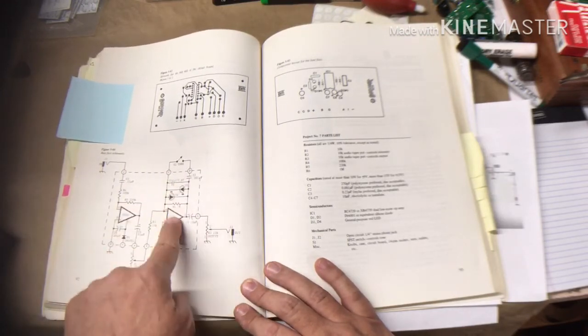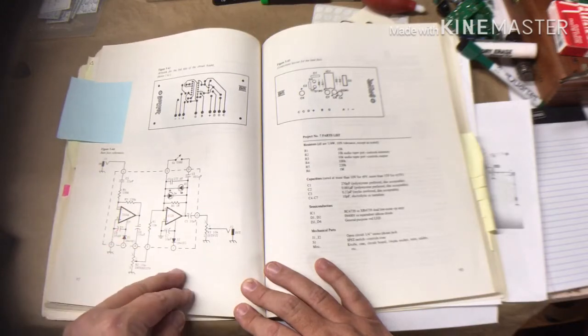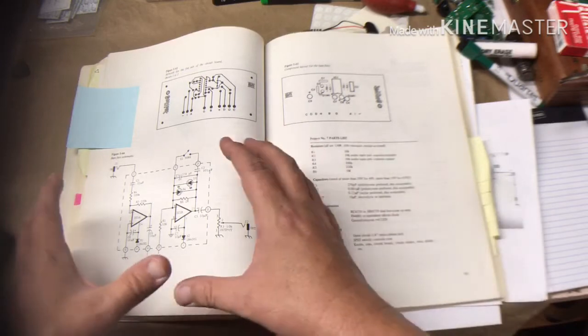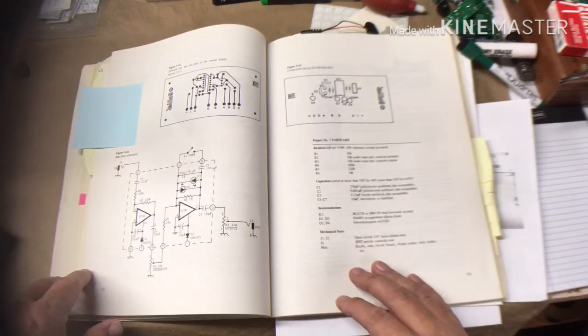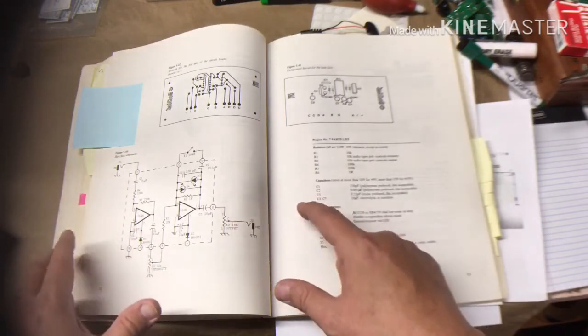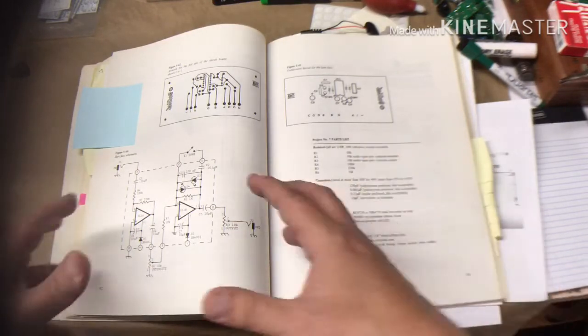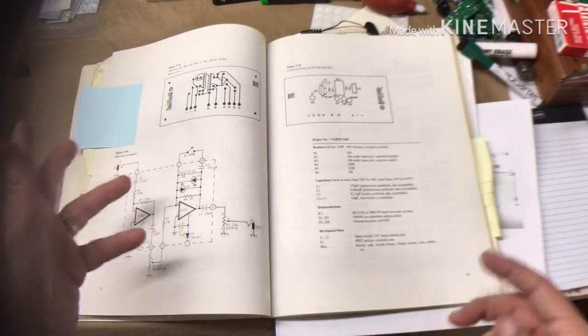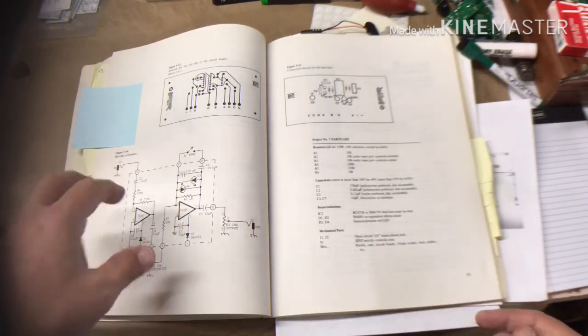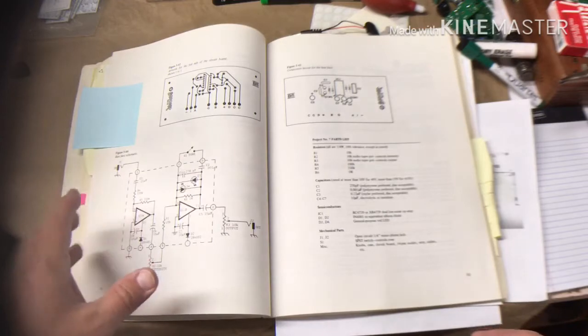And so that got me thinking, well can I just put all of those projects together? Yeah, there are some different capacitor and different resistor values and such, but could I put something together and maybe put some switches or a potentiometer or two to adjust and get the sound of project one, six, and seven, or some combination thereof?